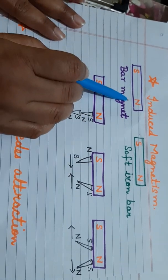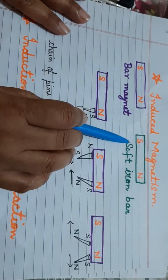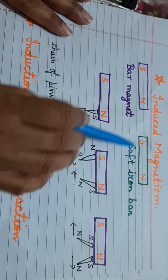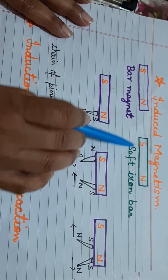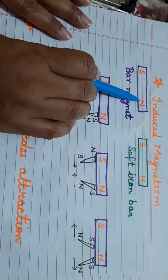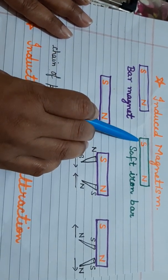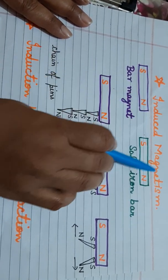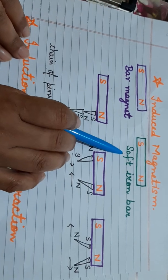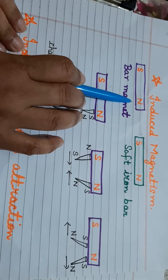There is one more thing to understand about induced magnetism. If you place a soft iron bar near a bar magnet, the soft iron bar starts behaving like a magnet under the influence of the bar magnet. The north pole of the bar magnet induces south polarity on the near end of the soft iron bar and north polarity on the far end — the soft iron bar attains opposite polarity.